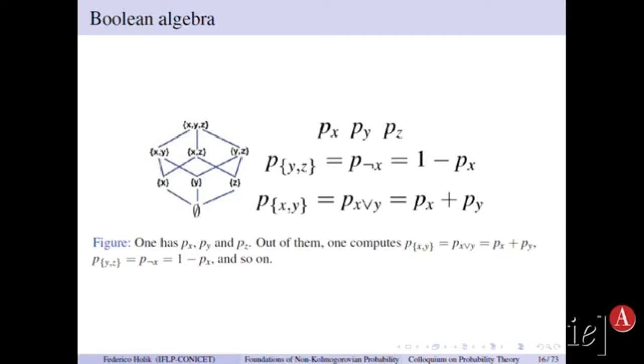Because if you know what is the probability of x, you can compute the probability of not x, which is given by 1 minus px. Or for example, for the disjunction between x and y, the probability of x or y will be given by the sum of the probabilities.